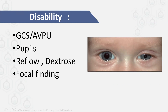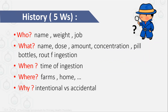Check blood glucose, correct it, and check for any focal findings. This primary survey will be done in no more than two to three minutes. Then in history, you really have to think of yourself as a detective. You need a lot of information, and there is a simple approach using the five Ws.